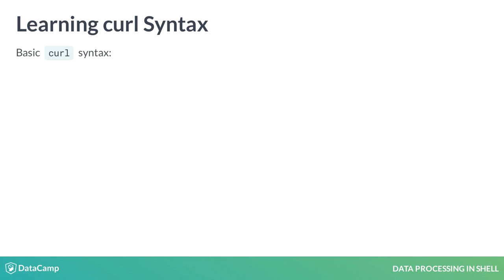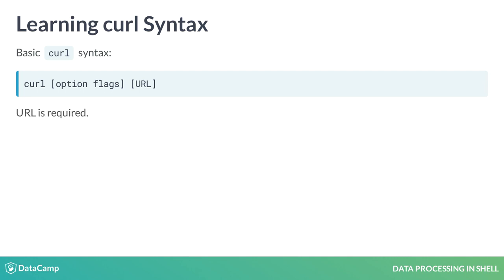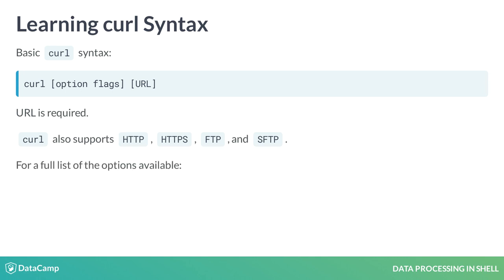The basic syntax for curl has the following structure: curl, option flags, URL. The URL is required for the command to run successfully. Curl supports a large number of protocol calls. For a full list, use curl --help.